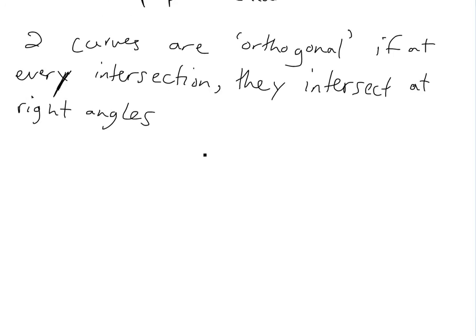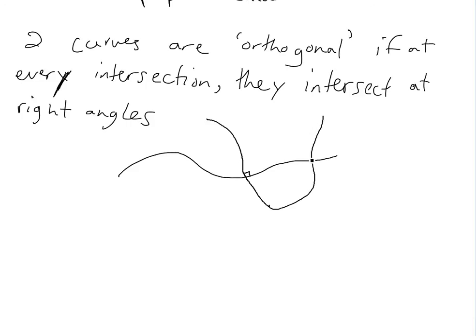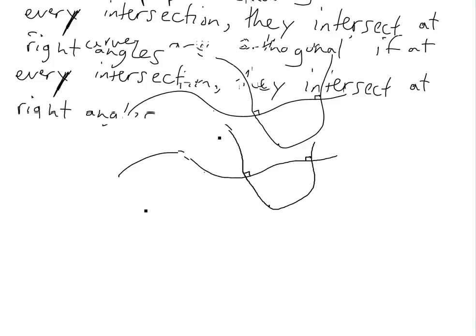What I mean by that is: if you have one curve and this curve intersects another, every time they intersect you're going to have a right angle. So at every intersection of these curves, it's always a right angle. And now we're going to look at orthogonal trajectories.